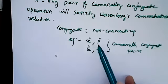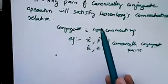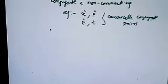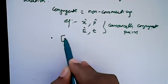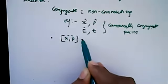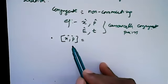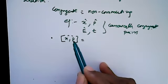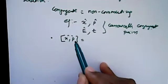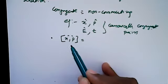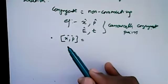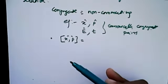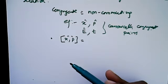What is special about canonically conjugate pairs? They satisfy Heisenberg's commutation relation. What is Heisenberg's commutation relation? The commutator of x and p — is it zero? No! When you measure position and then momentum versus when you measure momentum and then position, the results are different.